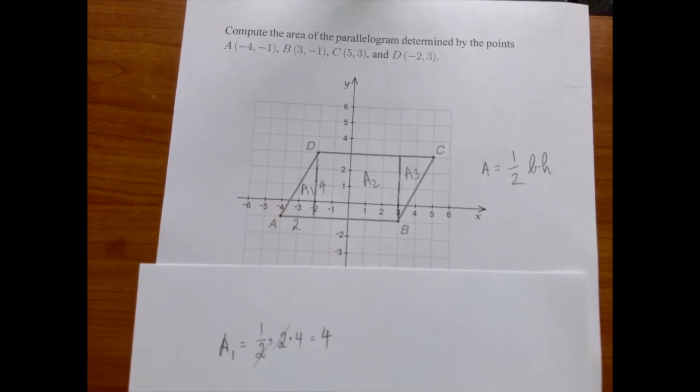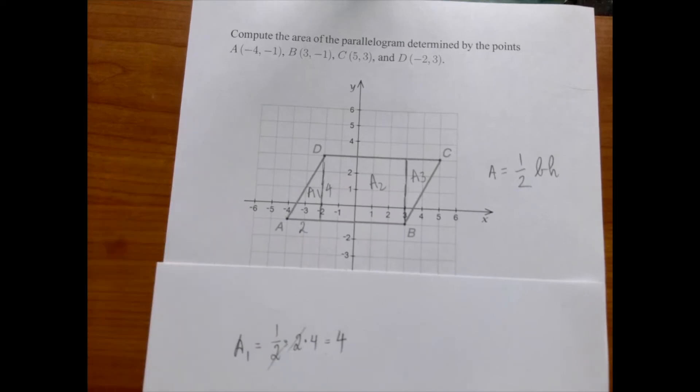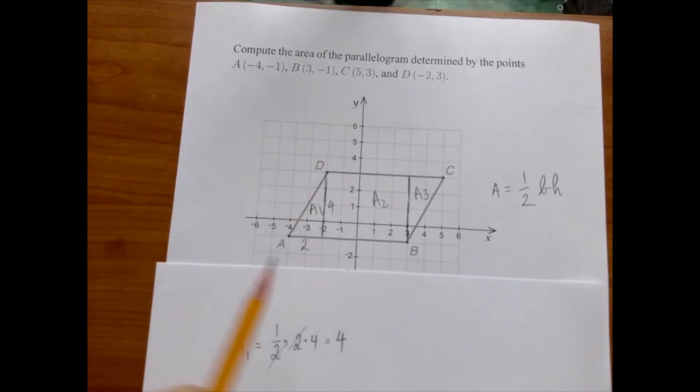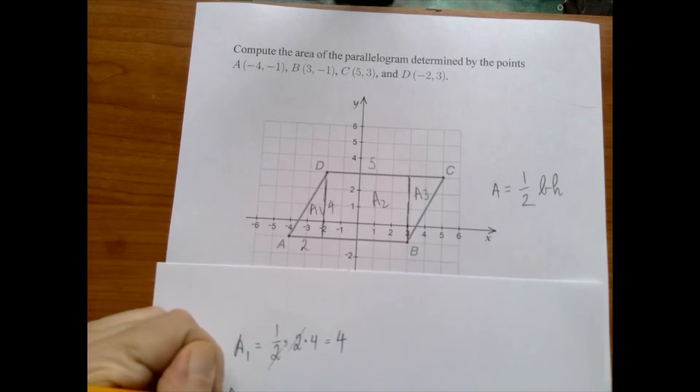That's the first area. The second area is the area of a rectangle, while the vertical side, we already found it to be four, and the horizontal side is five units long. So the second area is four units times five units.